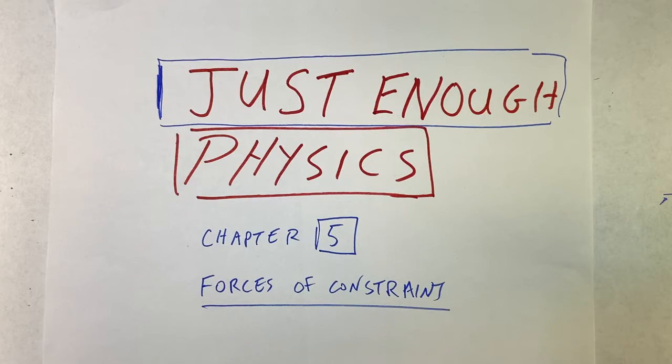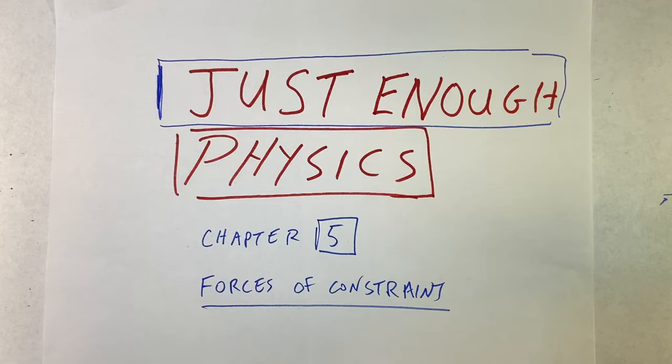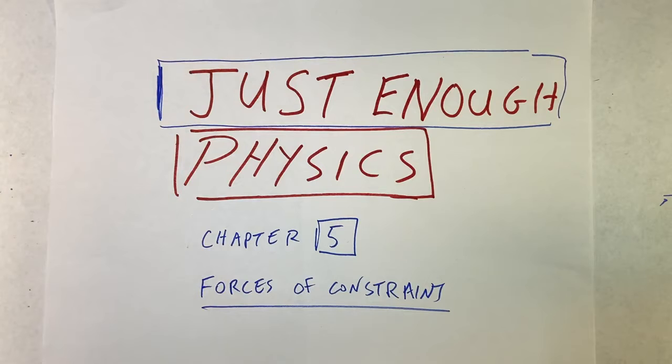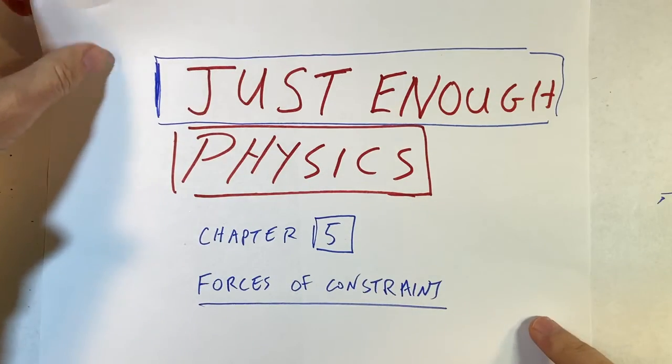We've done a lot of physics so far: kinematics, how you describe motion, then forces and what those forces do. In the last chapter, Chapter 4, we looked at what I call calculated forces—these are forces that you can write down an equation for. In this chapter we're going to be looking at forces of constraint. This is something you're not going to find a lot of textbooks talking about, but I think it's important to distinguish between different kinds of forces.